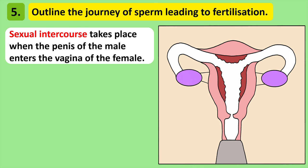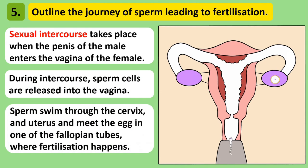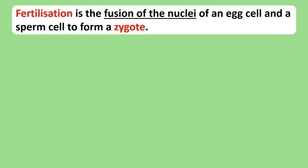Once sperm enter the female, they travel through the cervix and uterus before entering one of the fallopian tubes. During sexual intercourse, millions of sperm are released into the vagina. Only one sperm cell finds the egg cell in the fallopian tube before fertilising it. Fertilisation happens when the egg cell and sperm cell meet — it is the fusion of an egg cell and a sperm cell to form a zygote.